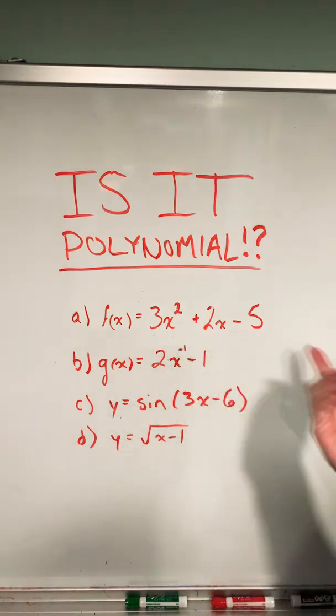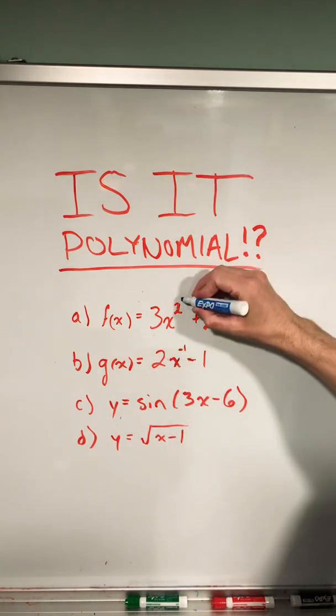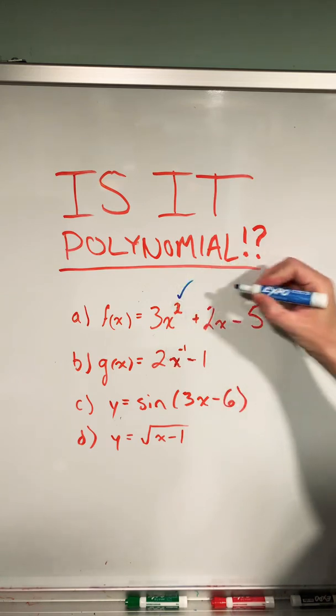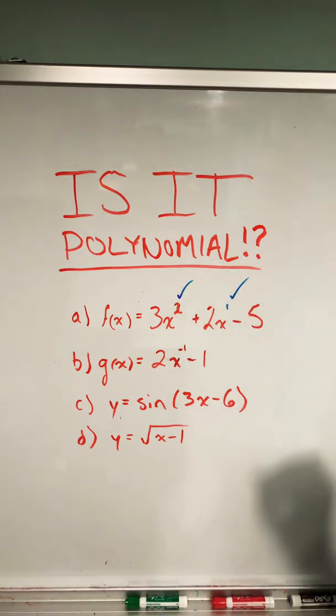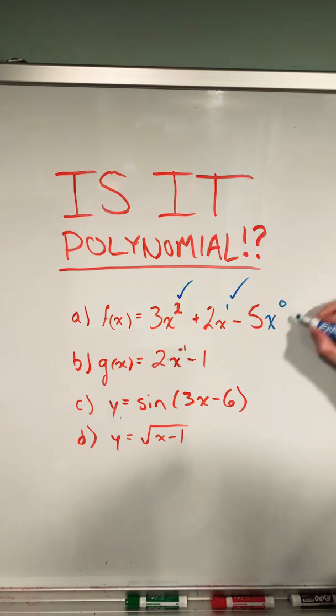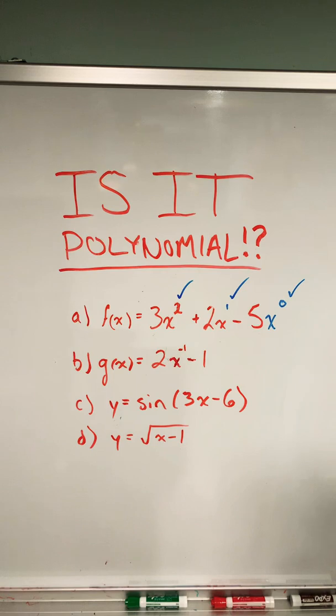Taking a look at the first one, this is just a quadratic function, and we know that there's an exponent of two, which is a whole positive power. There's an imaginary one here, that's a whole positive power. And there's also an invisible x to the power of zero. Well, zero powers work for this to be a polynomial function. So we do consider this a polynomial function.